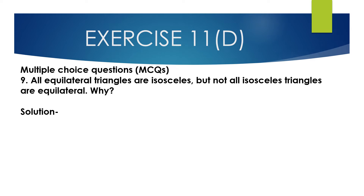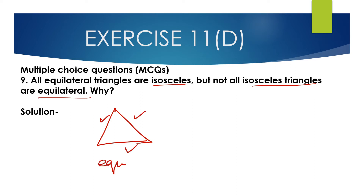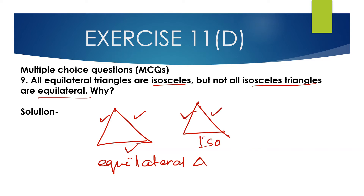Now question number 9, High Order Thinking Skill questions. All equilateral triangles are isosceles, but not all isosceles triangles are equilateral. Why? Any triangle in which all three sides are equal is an equilateral triangle. All equilateral triangles are isosceles because at least two sides are equal. So this is true.